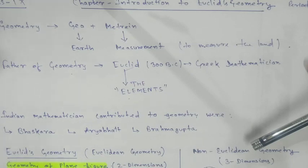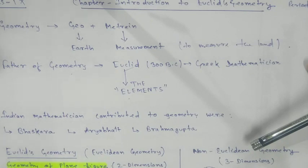This geometry word comes from Greek — geo plus metron. Geo means earth and metron means measurement. That means to measure the earth.